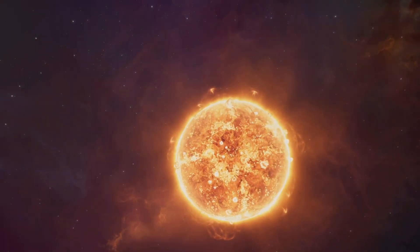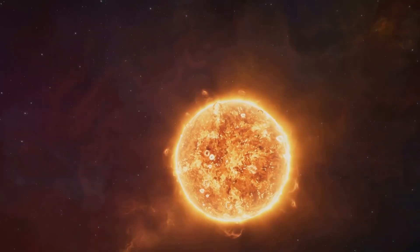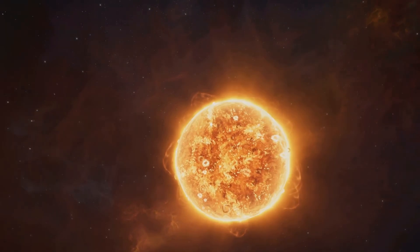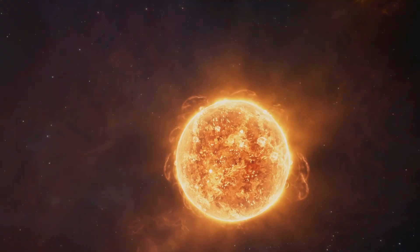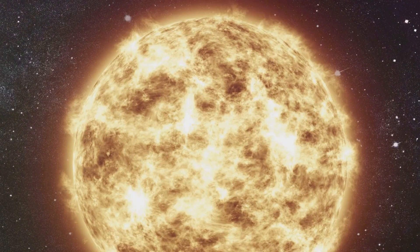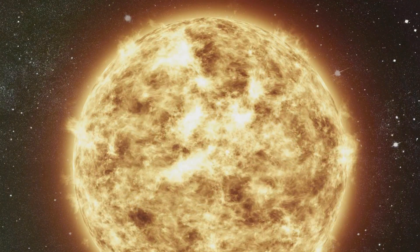Stars come in a variety of types, each with their own unique set of characteristics. There are red dwarfs, yellow dwarfs, and blue giants, to name a few. Red dwarfs are the most common type of star, smaller and cooler than our own sun. Yet, they have a remarkable lifespan, burning steadily for up to trillions of years.